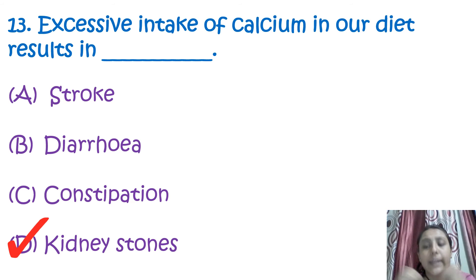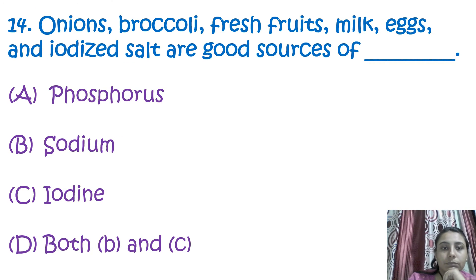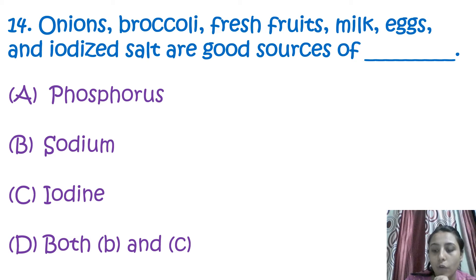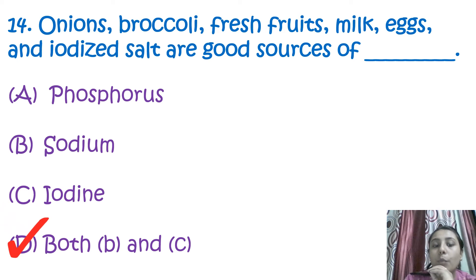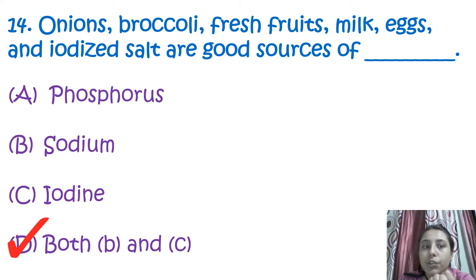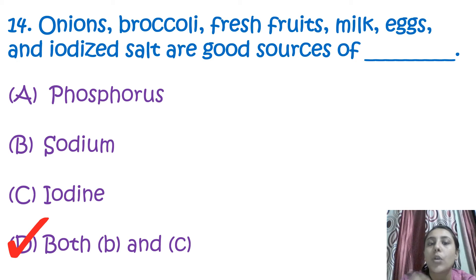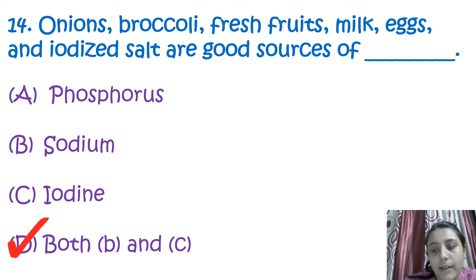The next question is: onion, broccoli, fresh fruits, milk, eggs, and iodized salts are good sources of what? The correct answer is both sodium and iodine — these foods are good sources of both sodium and iodine.